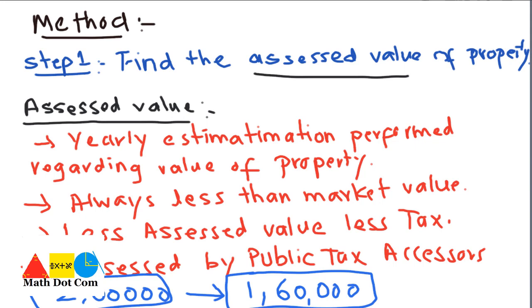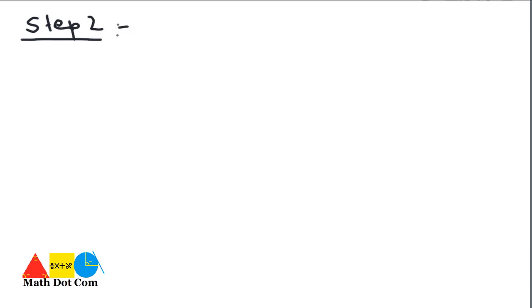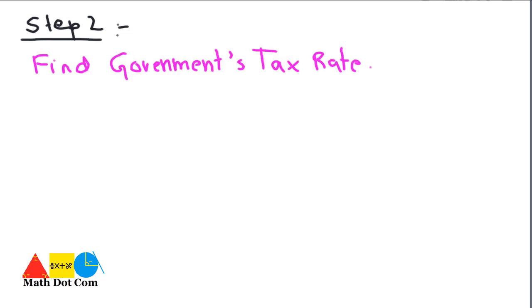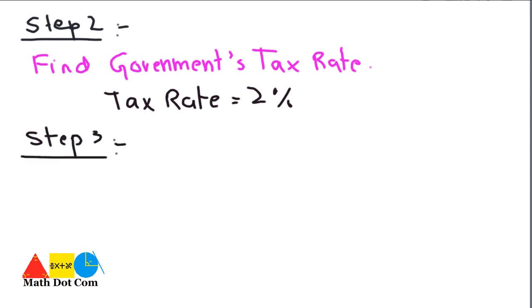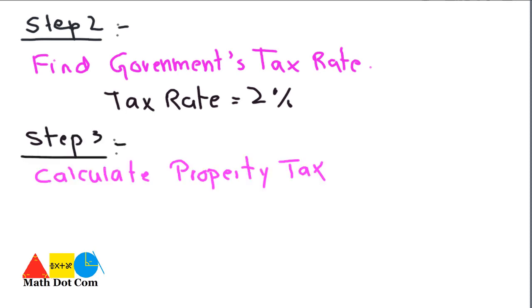This was Step 1 — estimating the assessed value, which is usually given in problems. Step 2 is to find the government's tax rate. It differs for different governments; some apply 3%, some apply 2%. Here, for example, we will say the tax rate is 2%.